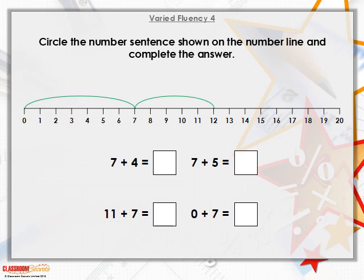What about eleven and seven more? So we put our finger on eleven on the number line, and we jump on seven more. Where do we end up? Yeah, that's right, eighteen.